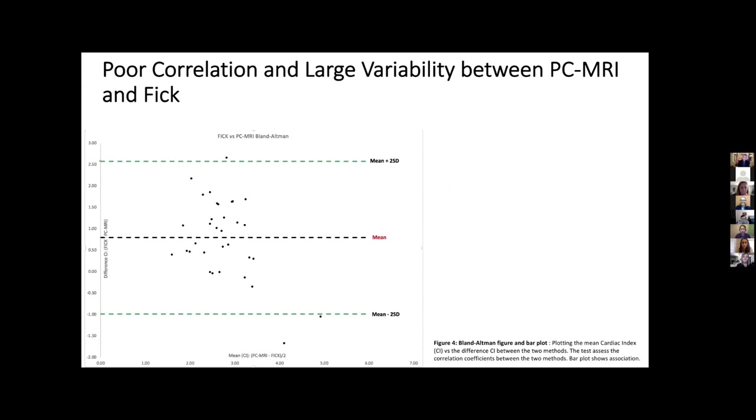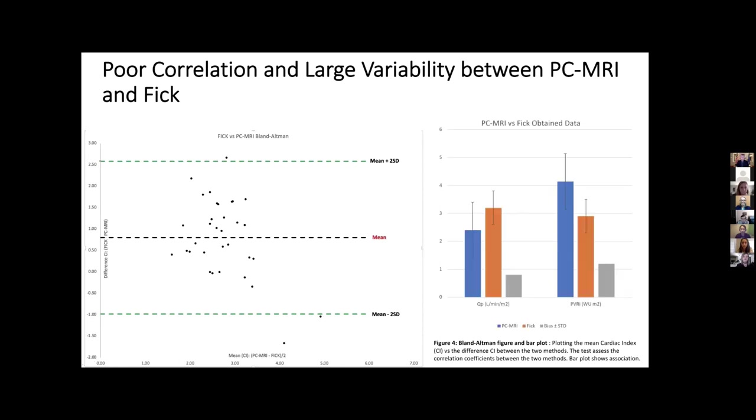This leads to our results. There's poor correlation and large variability between phase contrast MRI and FIC. This graph may look difficult, but it's a simple Bland-Altman plot that compares two metrics measuring the same thing. The metrics of PCMRI and FIC are taken on the mean on the x-axis, and on the y is the difference between the two metrics. Each dot represents a patient, and this should line up perfectly along this mean here if there are the same data points. In fact, we have three data points outside our upper and lower agreements showing even bigger difference between the two.